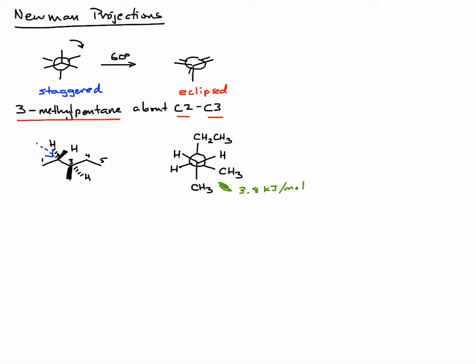In this conformation, the ethyl group and this methyl are anti to one another — anti meaning a 180-degree relationship. Let's do a rotation about the front carbon atom. To keep things consistent, we'll do a 60-degree clockwise rotation.